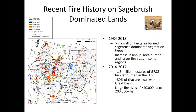Between 2014 and 2017, approximately 1.5 million hectares of greater sage-grouse habitat burned in the U.S., and approximately 80 percent of that area was within the Great Basin. Just during this short time period alone, we have seen very large fire sizes ranging from over 40,000 hectares to over 200,000 hectares in size.